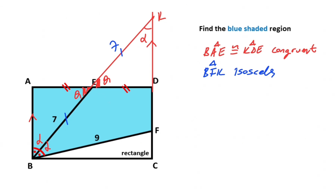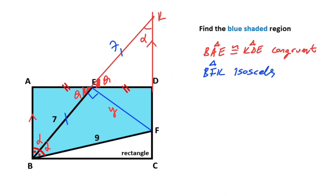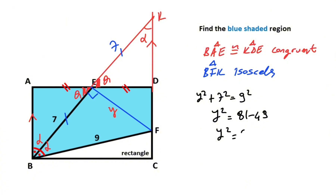So if we connect point E and point F like this, the angle between BE and point F must equal 90 degrees. Let's call the height here y. For this triangle, if we apply the Pythagorean theorem, we get: y² + 7² = 9². So y² = 81 − 49 = 32, which means y equals 4 root 2.